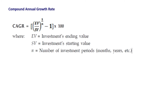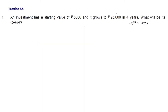In this year's sample paper, a question on compound annual growth rate was given in MCQ for 1 mark. Now we will proceed with the questions from exercise 7.5. The first question: an investment has a starting value of rupees 5000 and it grows to 25000 in 4 years. What will be its compound annual growth rate? Here the starting value, ending value, and time period are all given, so we can find CAGR using the formula. The values for exponential expressions will also be given in the question itself.